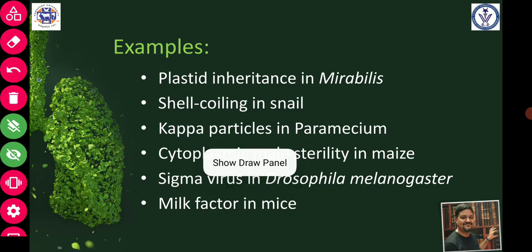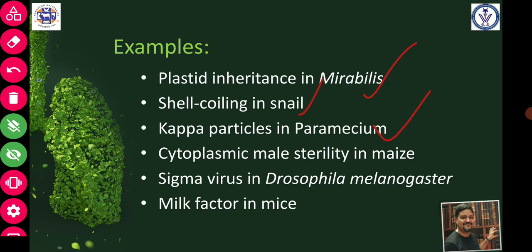The very famous examples of cytoplasmic inheritance are: plastid inheritance in Mirabilis (the four o'clock plant), shell coiling in snails, kappa particles in Paramecium, cytoplasmic male sterility in maize, sigma virus in Drosophila melanogaster, and milk factor in mice. The first three examples are discussed in the coming slides, whereas for the remaining three, you have to research them — look in books or Google to understand how they are inherited and where the genes are located.